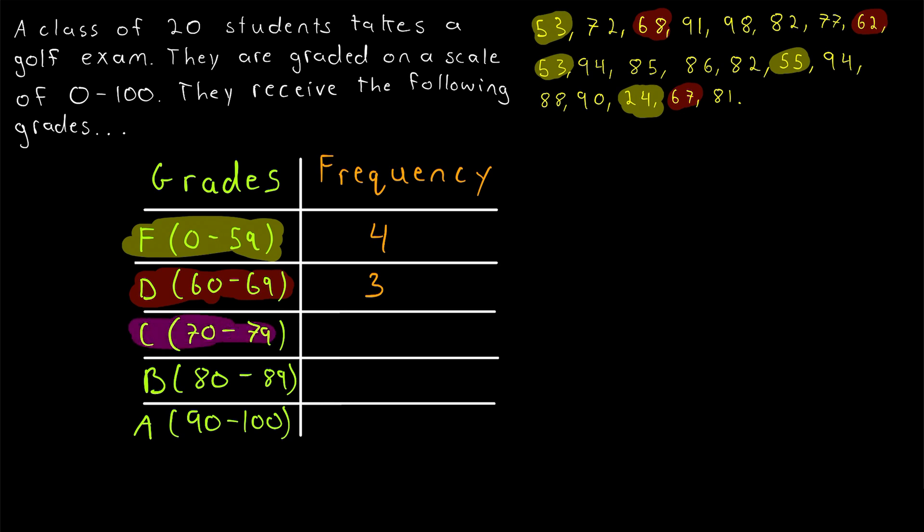Next, we'll count up the C's, all of the scores between 70 and 79. Begin with that 72. That's 1C. 77. That's 2C's. And it looks like that's it. So that's a total of 2C's.